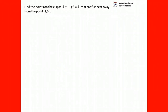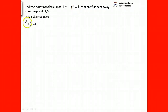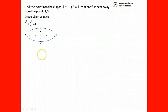Find the points on the ellipse 4x² + y² = 4 that are furthest away from the point (1, 0). The fact that they tell you it's an ellipse is great. It's not in the standard form we usually see — normally the equation is x²/a² + y²/b² = 1, from which we can tell the graph's shape: going ±a along one axis and ±b along the other. This ellipse is centered at the origin.